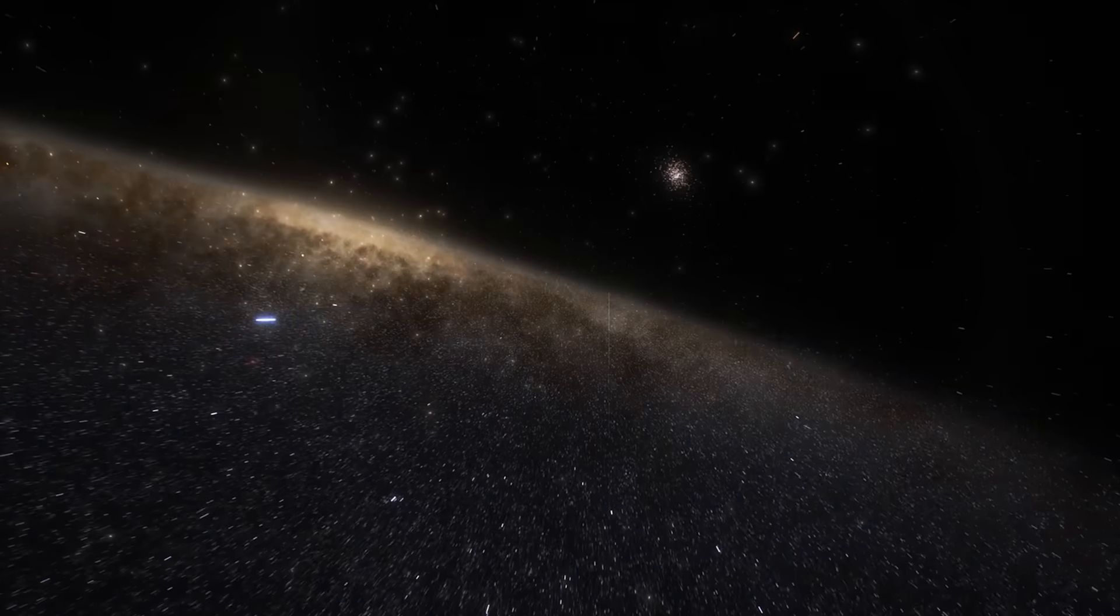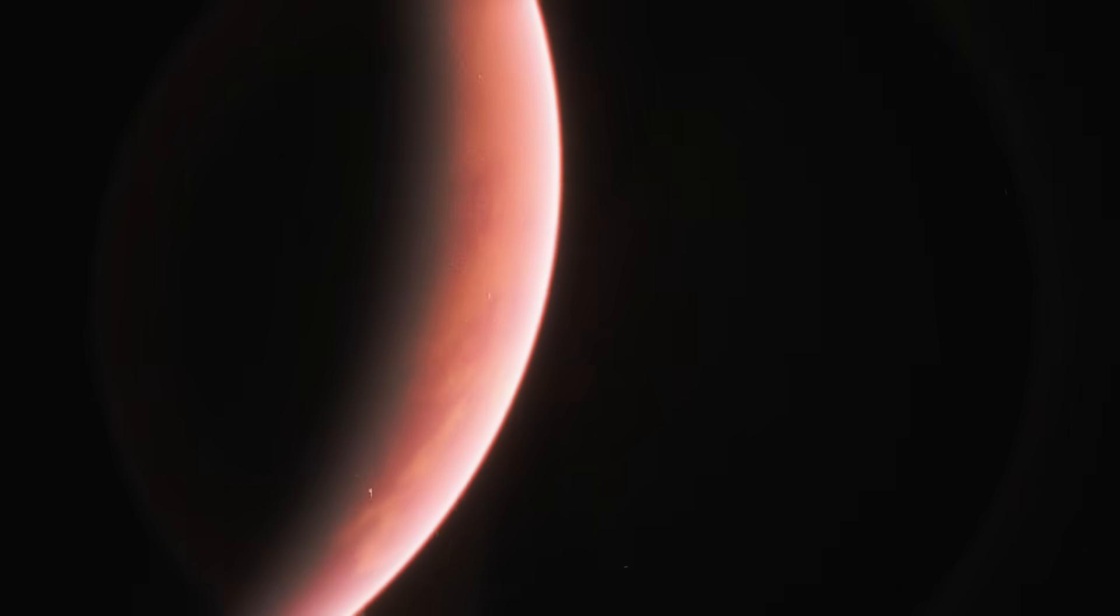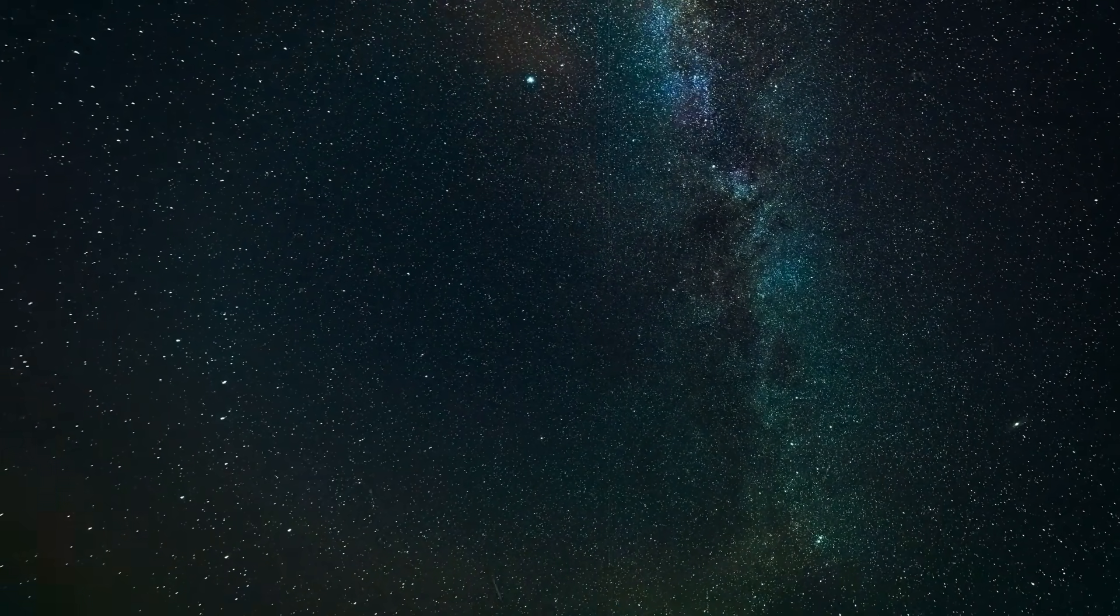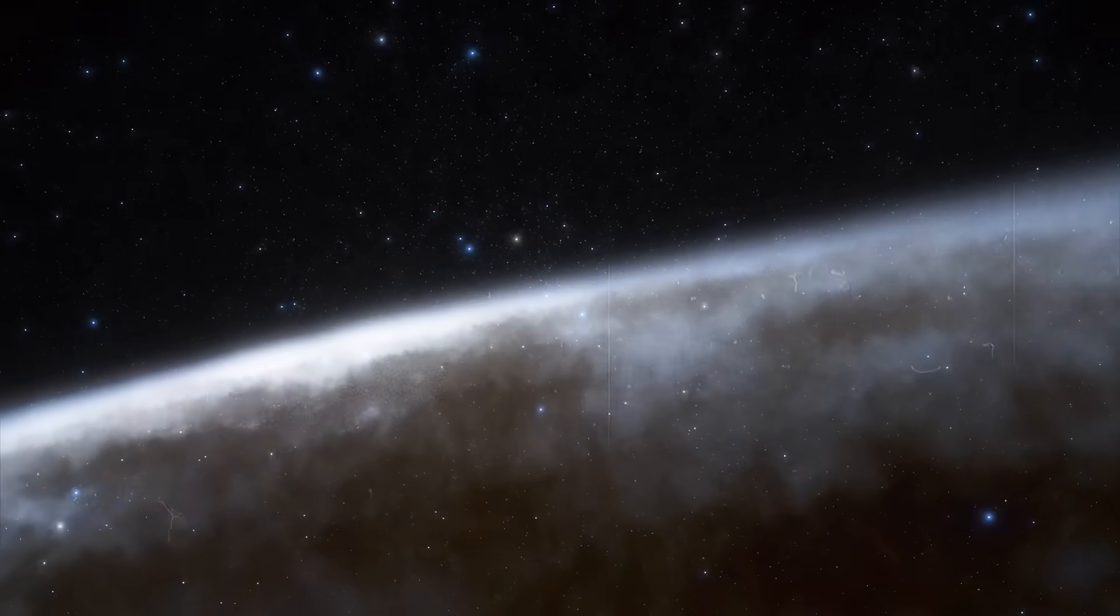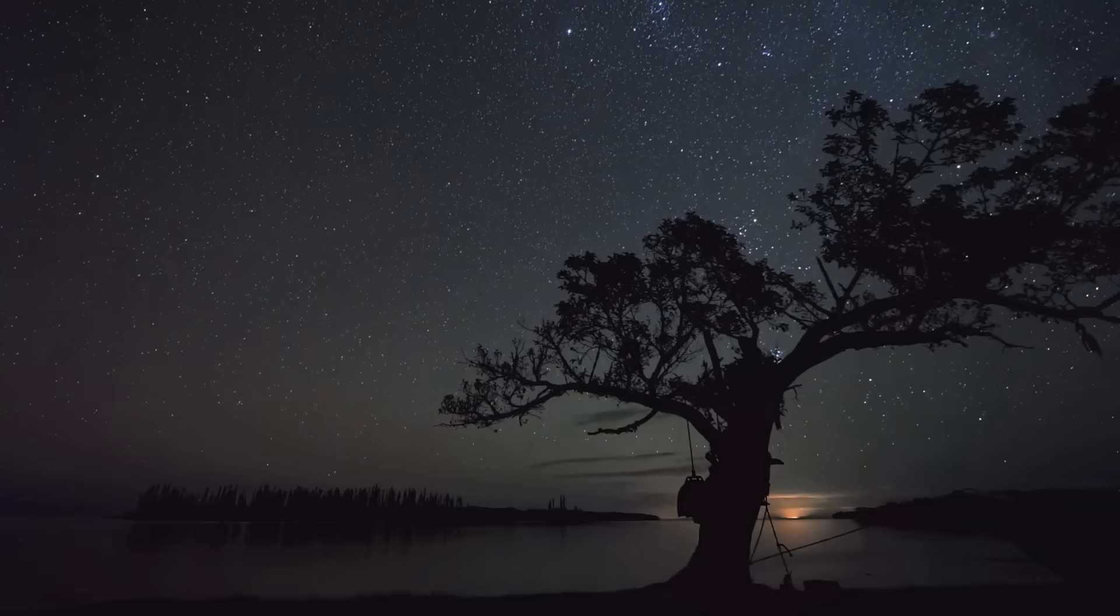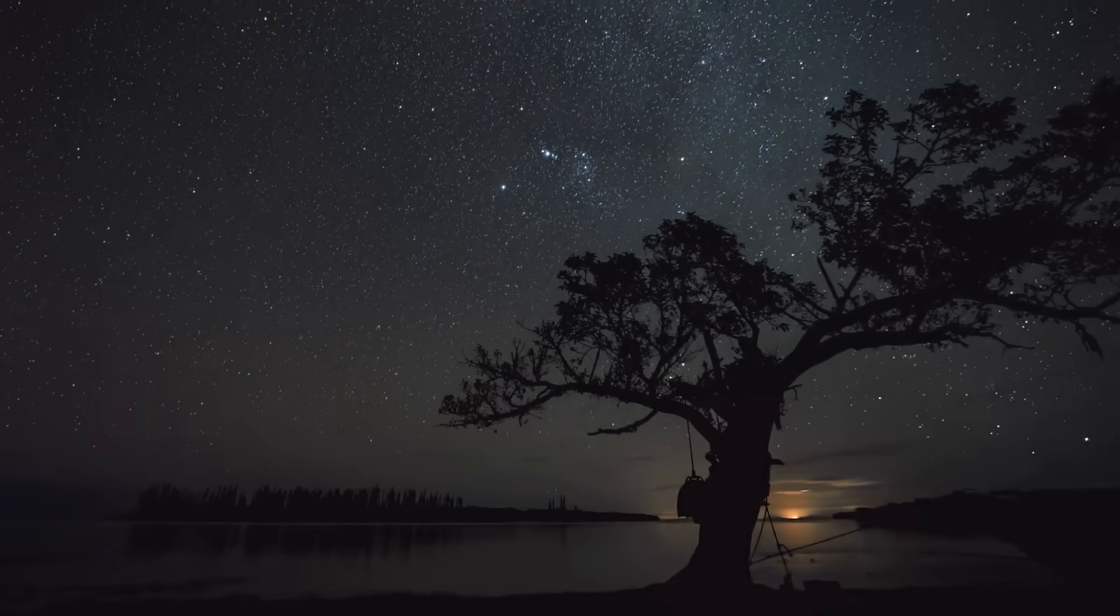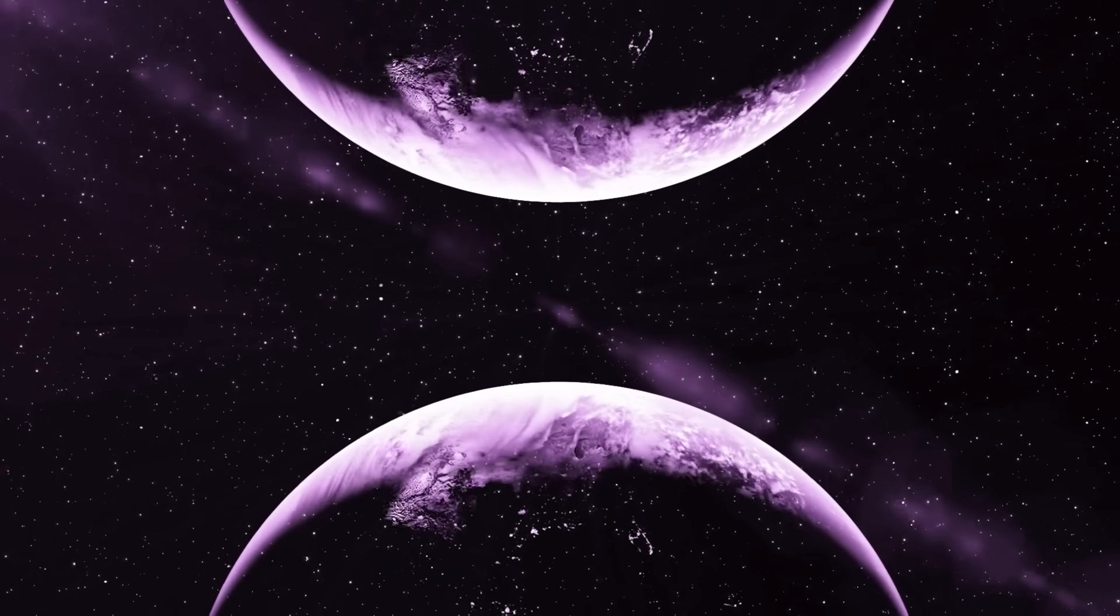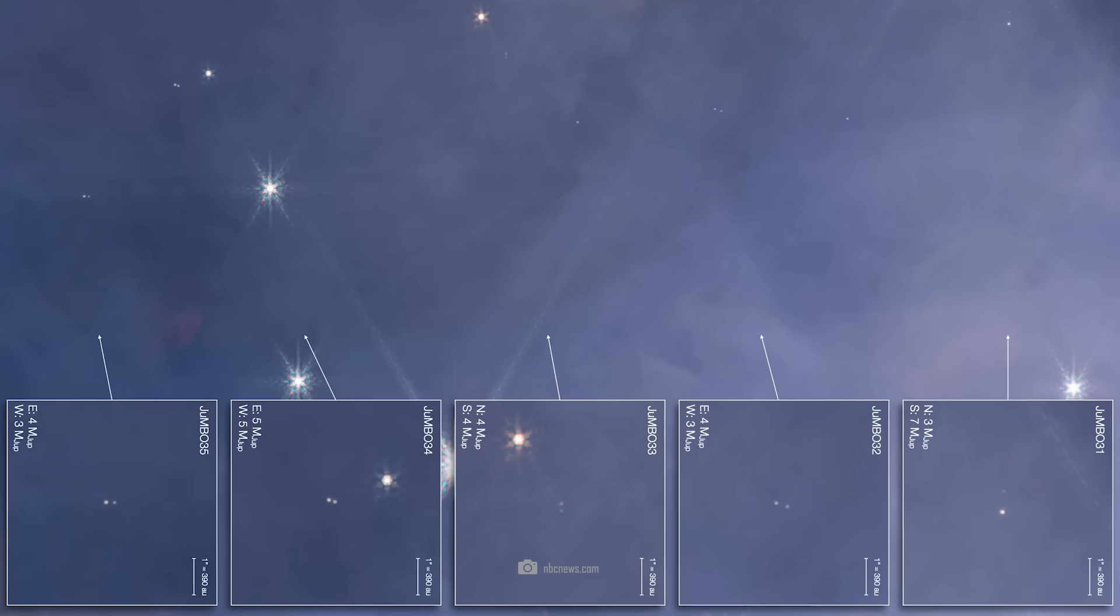Vagabonding planets can form in different ways. One common way is ejection from their original star system. This can happen through dynamic interactions with other planets or close stellar flybys where gravitational forces are strong enough to pull the planets out of their orbit. Another possibility is that they were formed as isolated objects in a star-forming region, similar to stars but without sufficient mass to initiate nuclear fusion processes. This could also explain the existence of jumbos.